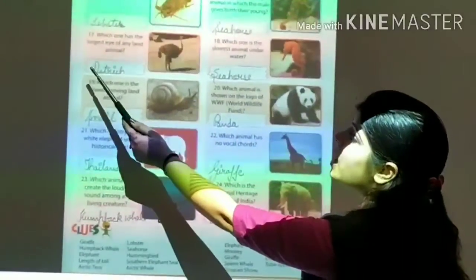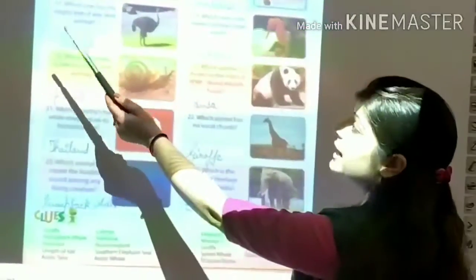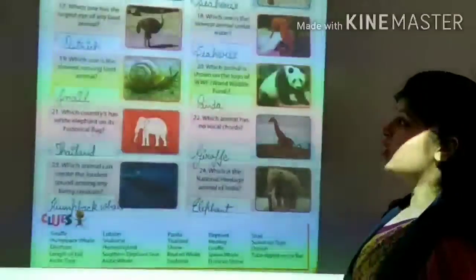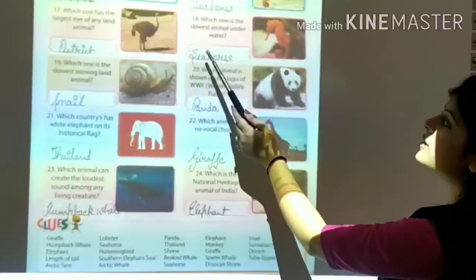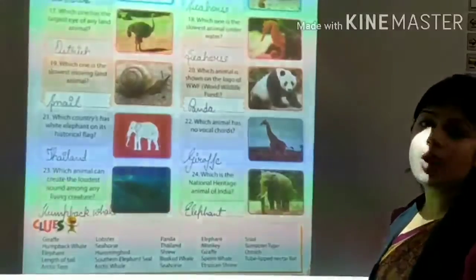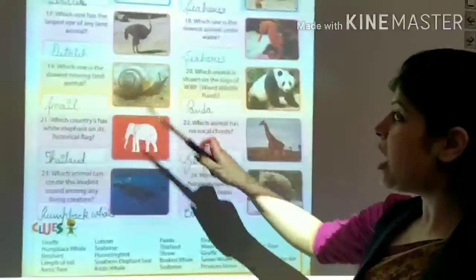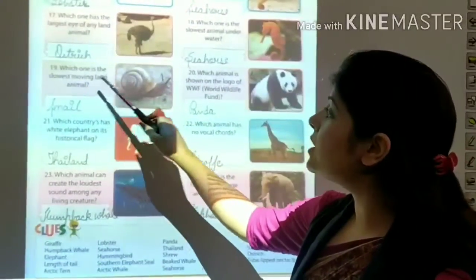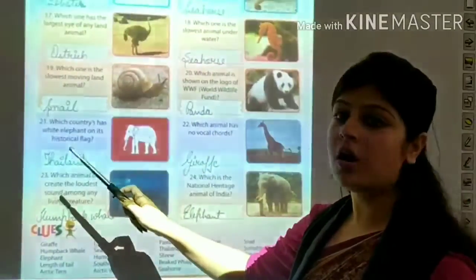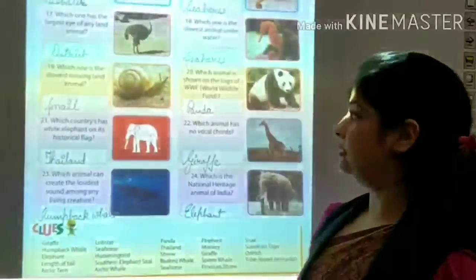Next question is, which one has the largest eye of any land animal? It's ostrich. Which one is the slowest animal underwater? It's seahorse. Which one is the slowest moving land animal? It's snail.